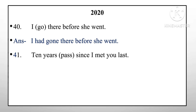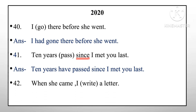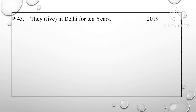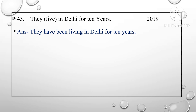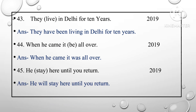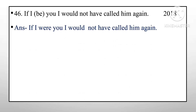'Ten years past since I met you last' — with 'since,' present perfect continuous applies. 'They live in Delhi for ten years' — with 'for ten years,' present perfect continuous: 'they have been living in Delhi for ten years.' 'When he came, it be all over' — answer: 'when he came, it was all over.' 'He stay here until you return' — answer: 'he will stay here until you return.' 'If I be you, I would not have called him again' — answer: 'if I were you, I would not have called him again.'